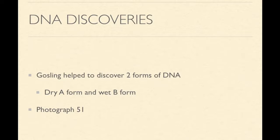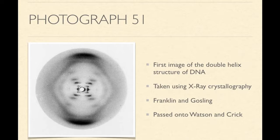For her DNA discovery, she worked with a student named Raymond Gosling. Her and Gosling actually discovered two different forms of DNA: a dry A-form, which is basically when the DNA is dried out and has one shape, and a wet B-form, which is when the DNA is wet and has a different shape. It was here that the famous Photograph 51 was taken — the first image of the double helix structure of DNA, captured using the x-ray crystallography technique that Franklin perfected at King's College. Unfortunately, due to a personality conflict with Maurice Wilkins, this photograph was passed on to Watson and Crick without her knowledge or consent.